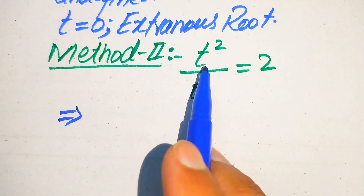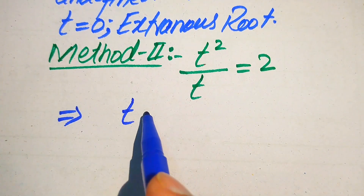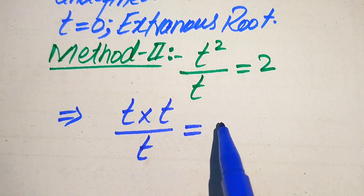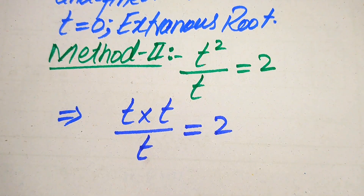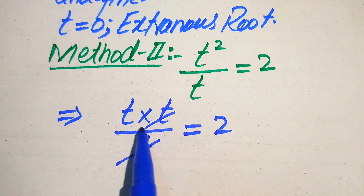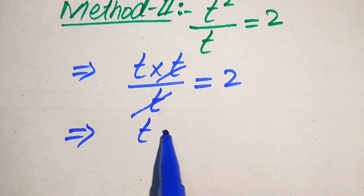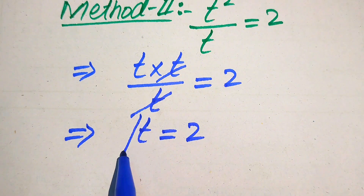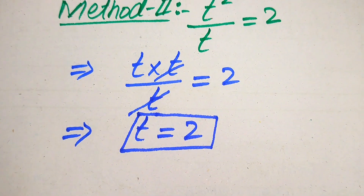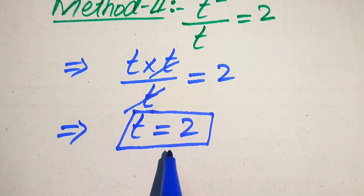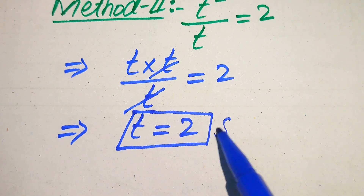In the second method, we write t squared as t multiplied by t, divided by t, equals 2. The t in the numerator cancels with the t in the denominator, giving us directly t equals 2. This method gives only one value, t equals 2, which we already verified is the solution.